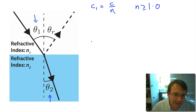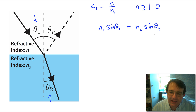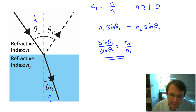The law of refraction states that the refractive index of the first material multiplied by the sine of the angle of incidence is equal to the refractive index of the second material multiplied by the sine of the angle of refraction. We can rewrite this as: sine of theta one divided by sine of theta two equals n2 over n1. This is what we call the law of refraction, or Snell's Law, even though the first person recorded to have written it down was Ibn Sahl in Baghdad in 984 AD.